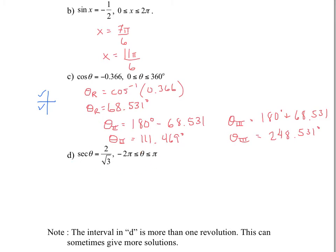The next one is secant equals 2 over square root of 3. Anytime you're asked to answer a question using secant, the only way to do it is to change it into cosine, because cosine and secant are reciprocal functions. Change secant to cos θ — for cos θ, you reverse the fraction, so you get cos θ equals square root of 3 over 2. Notice that this is an exact value, so you don't need your calculator.